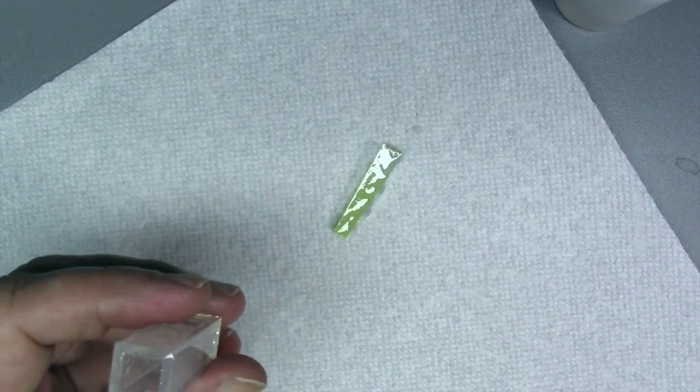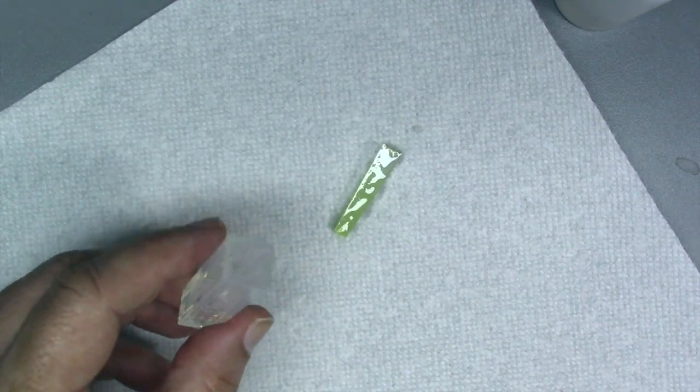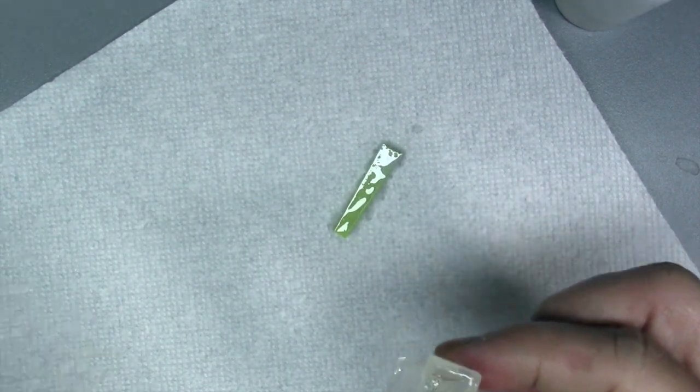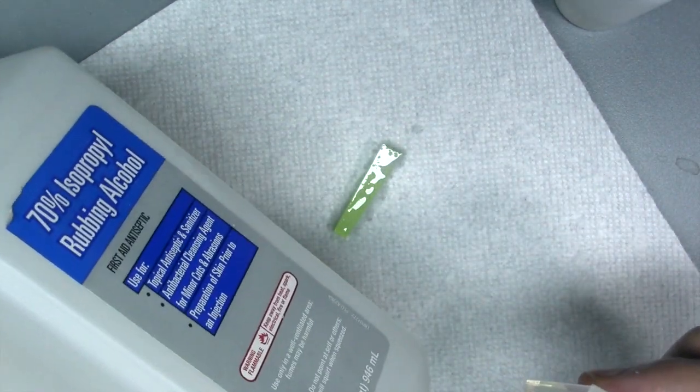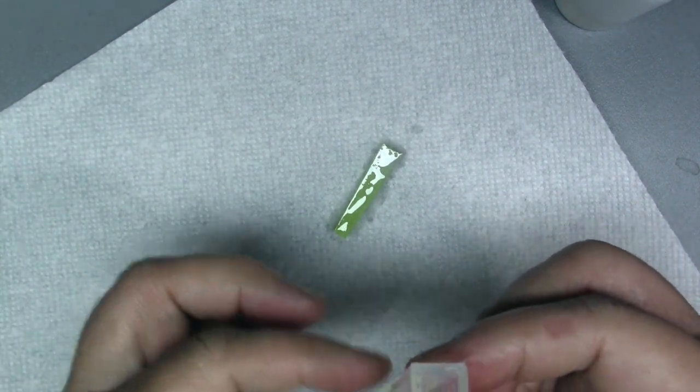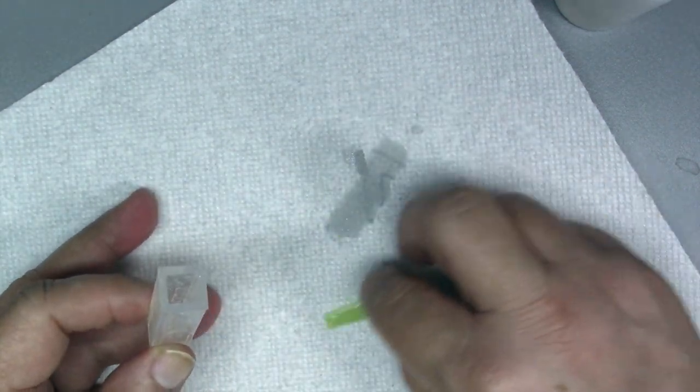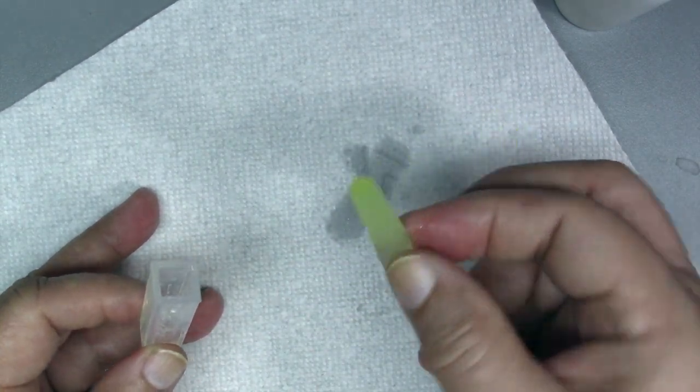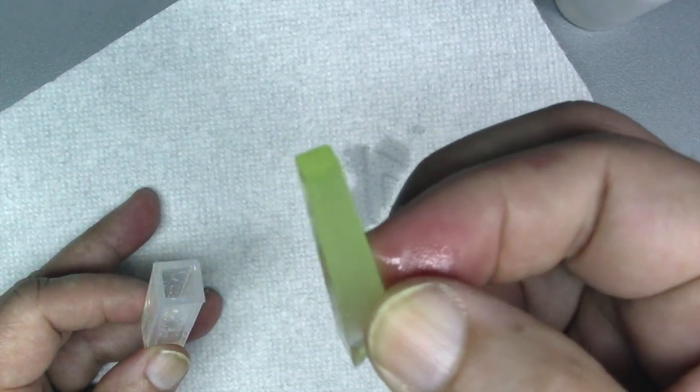Now all you got to do is be sure and clean this out with some standard isopropyl alcohol when you finish before you put more epoxy in it, because otherwise it could affect how the piece comes out.